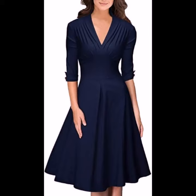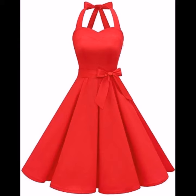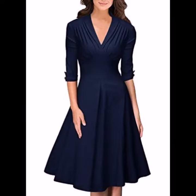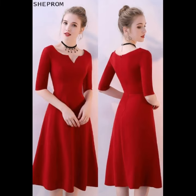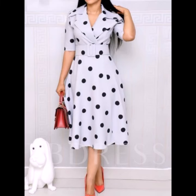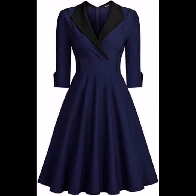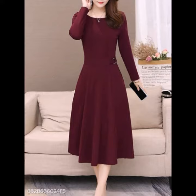Knee-length dresses tend to fall anywhere from just above the knee to mid-calf when it comes to midi dress styles. Think cocktail dresses in an A-line or fitted cut. The most universally flattering skirt length is just above or just below the knee. If you are petite, the recommended hemline is just above the knee. You can wear different styles of shoes with knee-length frocks.